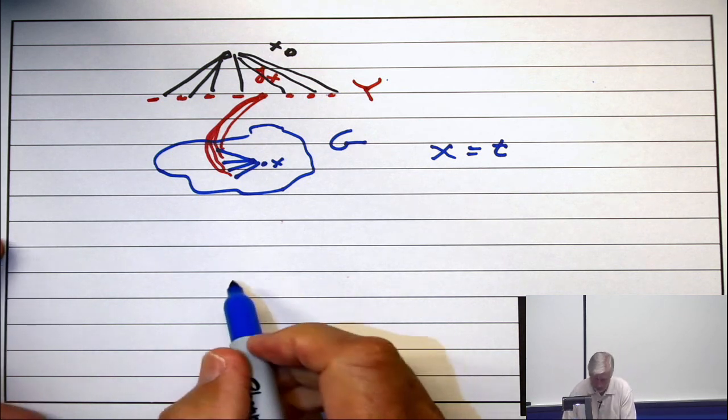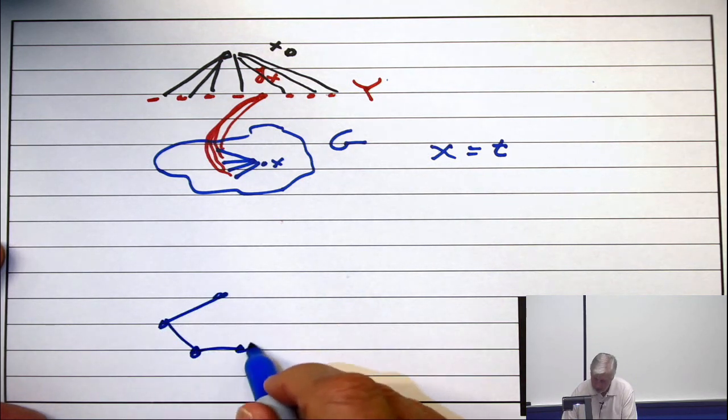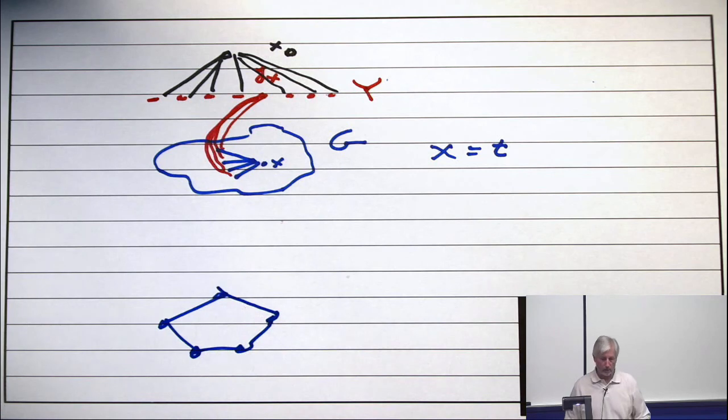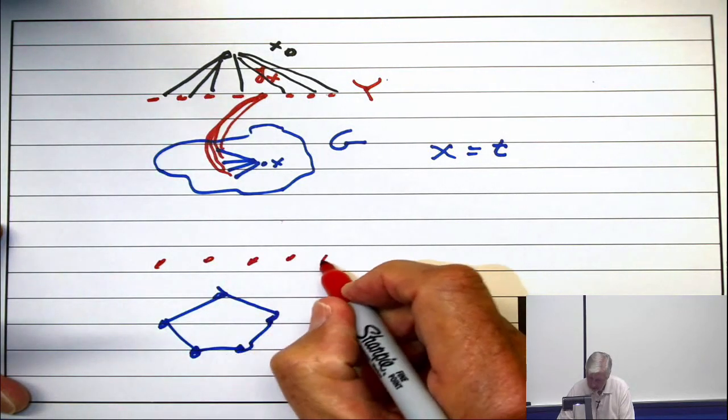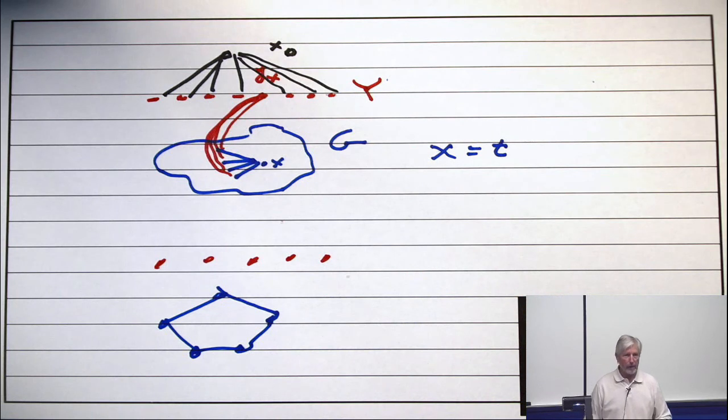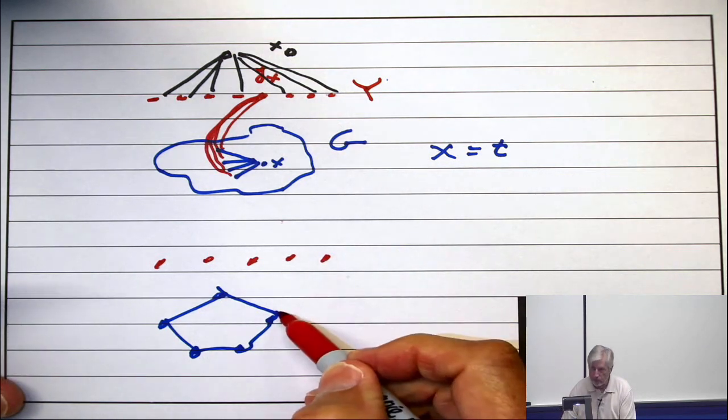I can actually draw it for a five cycle. So, for a five cycle, I would take one, two, three, four, five. That's my original graph. Now I put down five vertices. And now they're paired up.